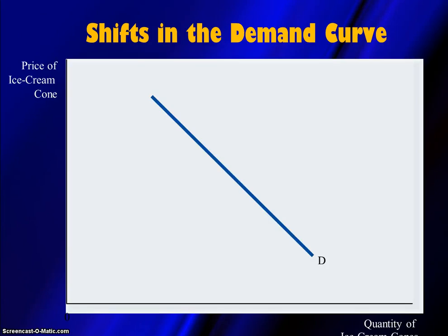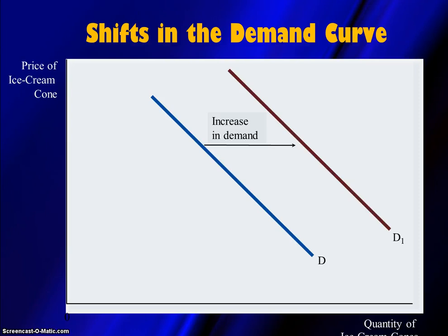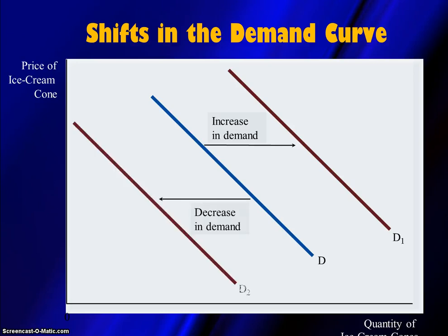If this is our original demand curve for ice cream cones, and the summer season rolls around, there's an increase in demand for ice cream cones — at every possible price, a higher quantity is demanded — and that demand curve is going to shift to the right. A rightward shift is an increase in demand, and a leftward shift is a decrease in demand. For example, if many people found out they were allergic to dairy products, then at every possible price, a smaller quantity of ice cream cones would be demanded, and that curve would shift to the left. The only way a curve shifts is if a higher or lower quantity is demanded at every possible price.